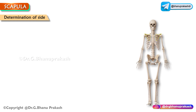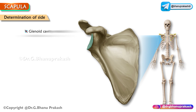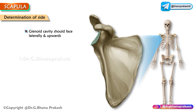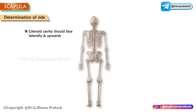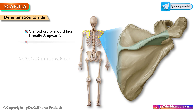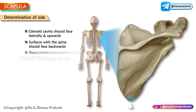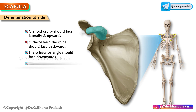To determine the side of the scapula: the glenoid cavity should face laterally and upwards; the surface with the spine should face backwards; the sharp inferior angle should face downwards; and the coracoid process should face forwards and laterally.